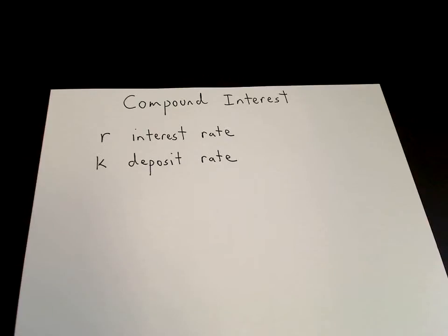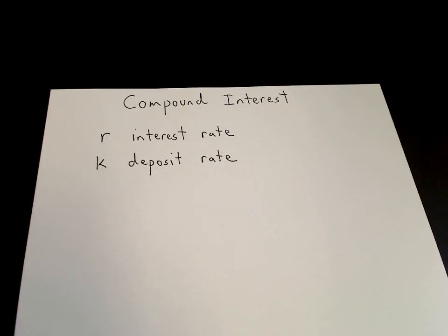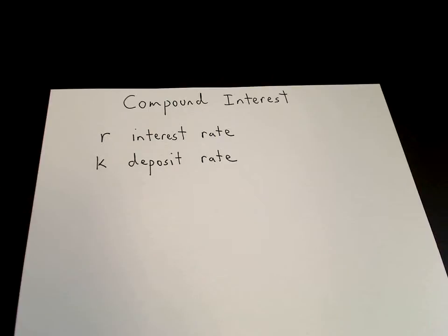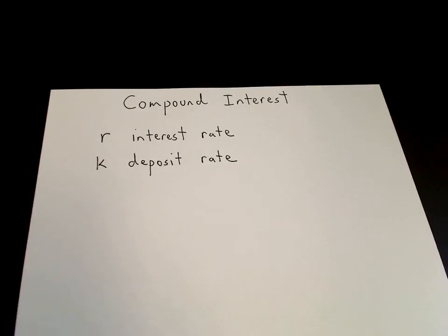This video will derive the equation for compound interest and solve the differential equation. We're assuming a deposit or an investment that has a constant interest rate R as well as a constant deposit rate K. We want to track the value of an investment under the assumption of continuous compounding of interest and continuous depositing.